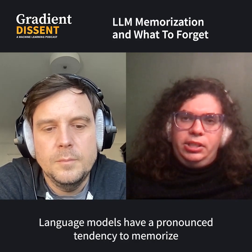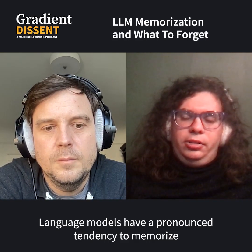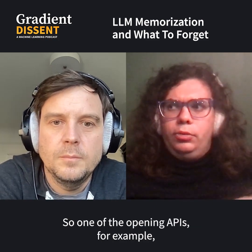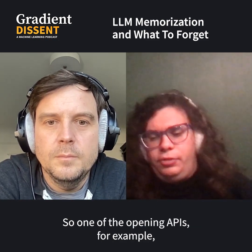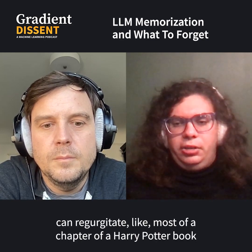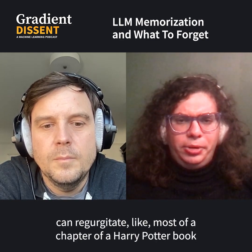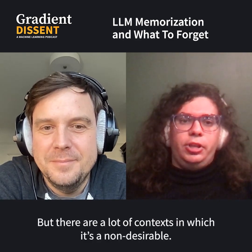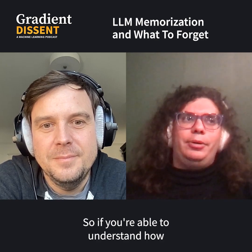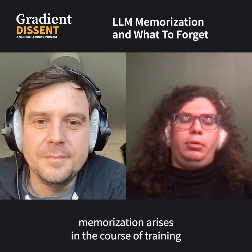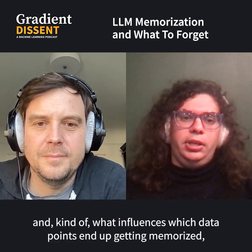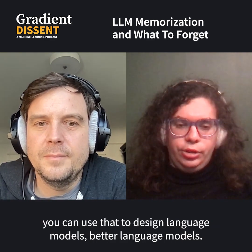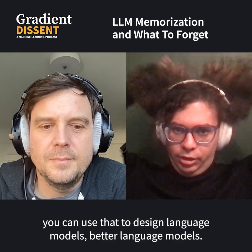Language models have a pronounced tendency to memorize long passages of particular texts in their training data. One of the OpenAI APIs, for example, can regurgitate most of a chapter of a Harry Potter book from a paragraph of a prompt. But there are a lot of contexts in which this is non-desirable. If you're able to understand how memorization arises in the course of training, and what influences which data points end up getting memorized, you can use that to design better language models.